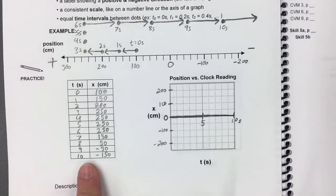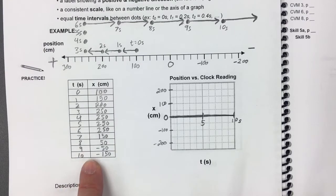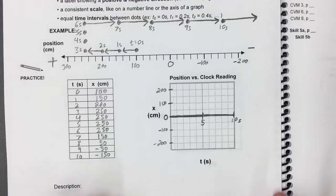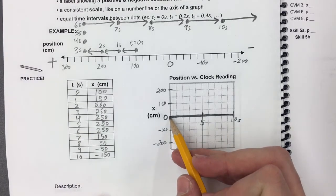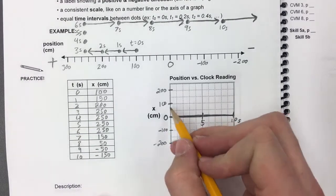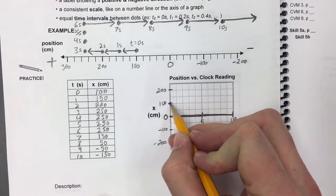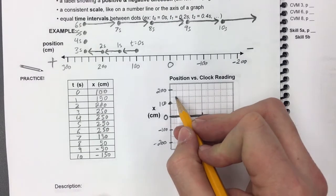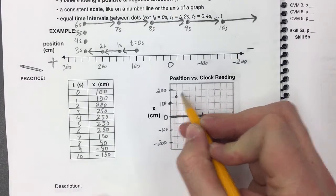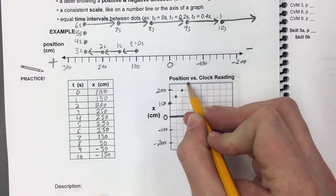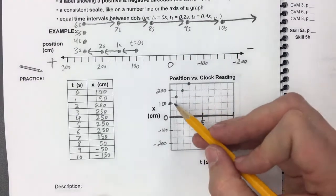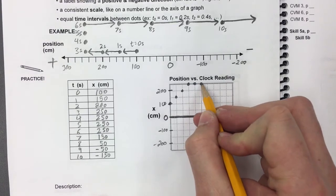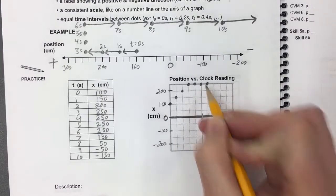So my job is basically to put this data from the data table or from the motion map—it's the same data—on the actual graph. So I can tell at a clock reading of 0 seconds, the object is at a position of 100 centimeters. And then the position increases by 50 centimeters for the next 3 seconds. It then stays at a constant value for 3 seconds.